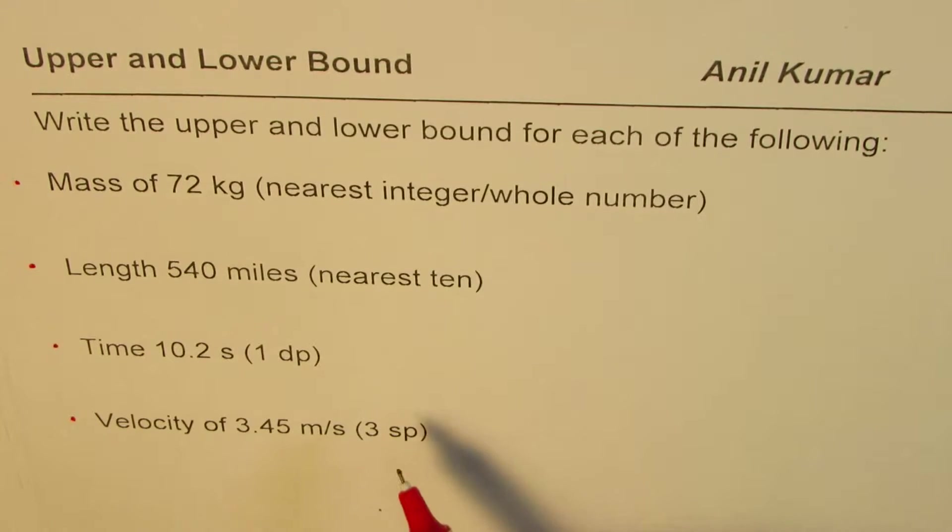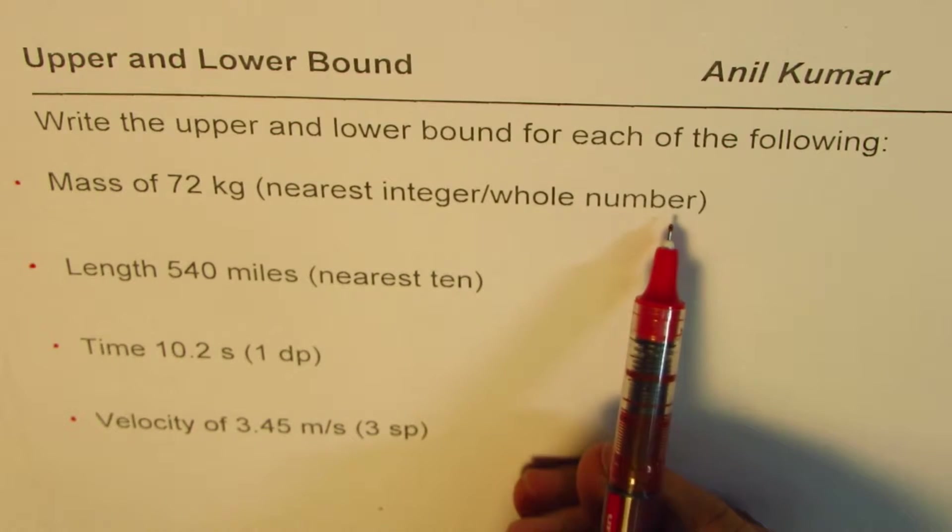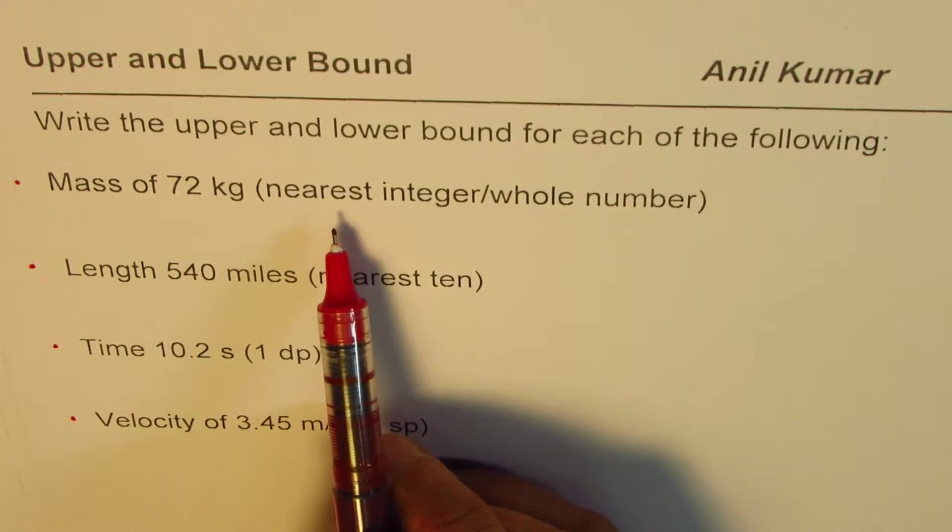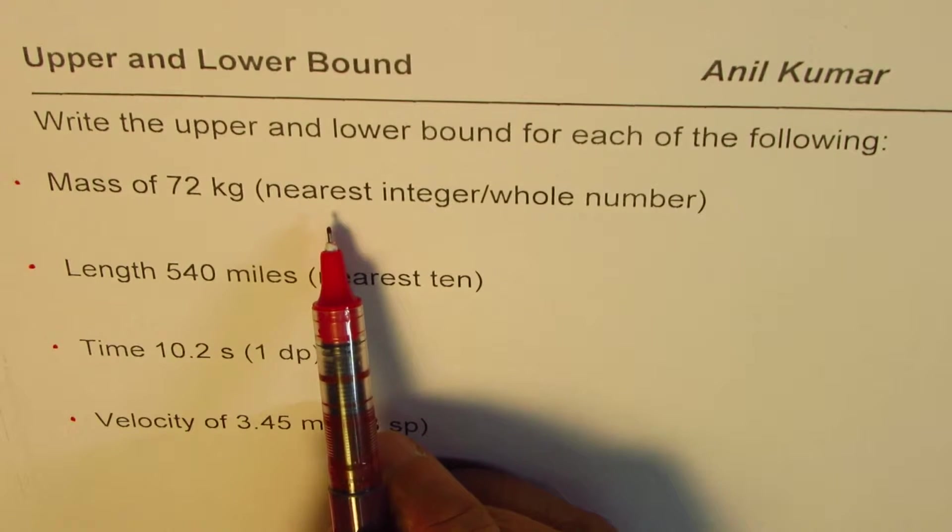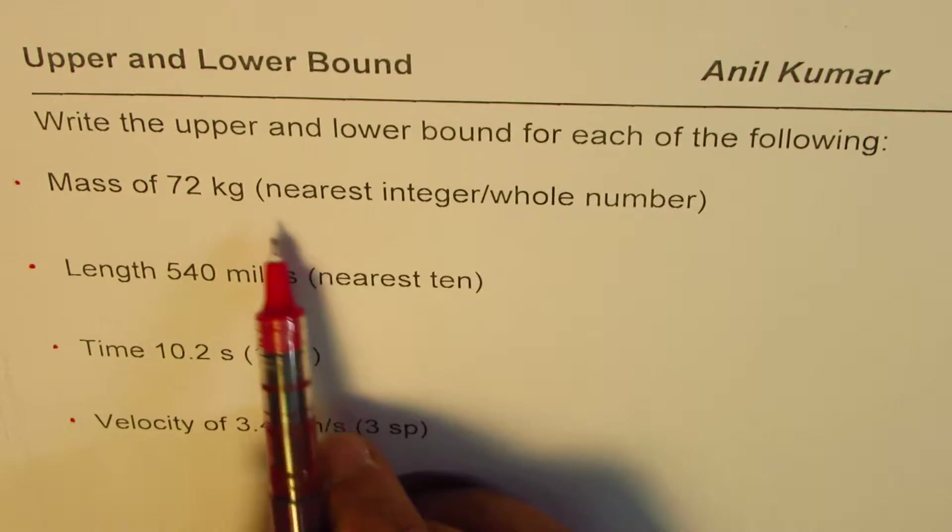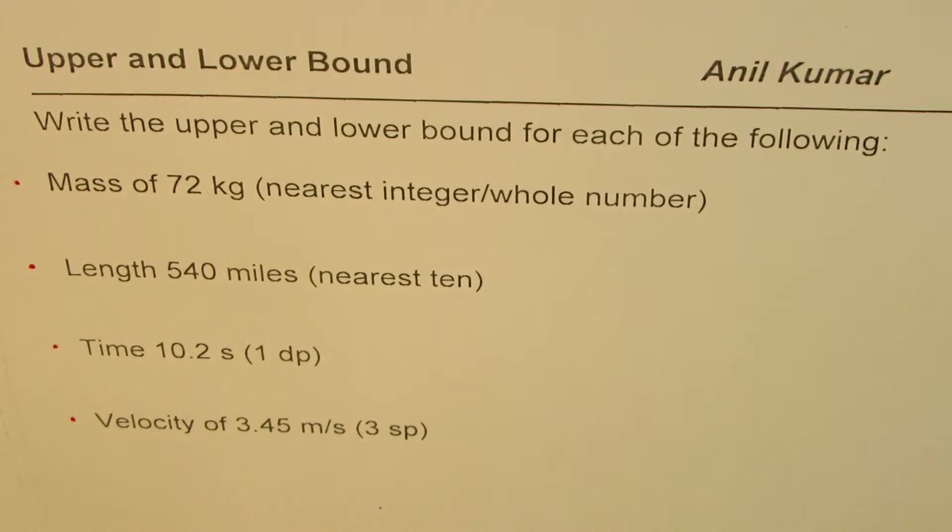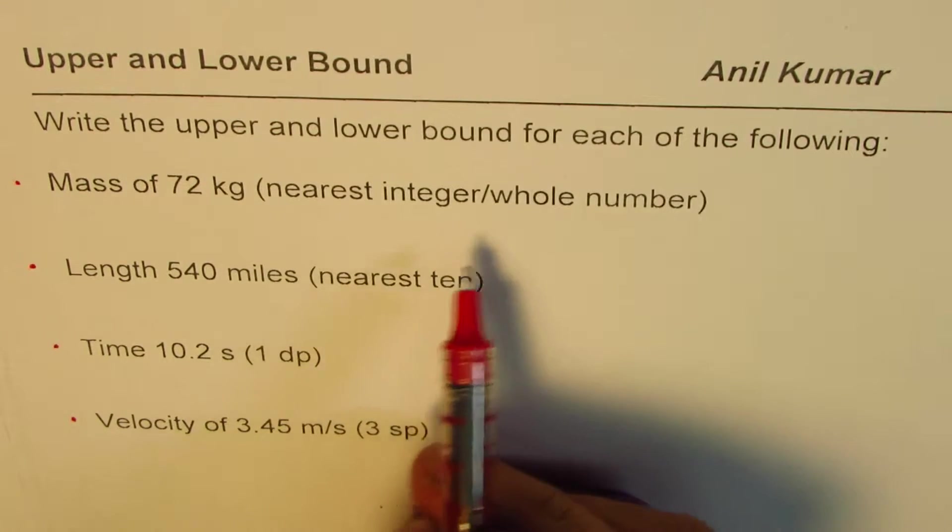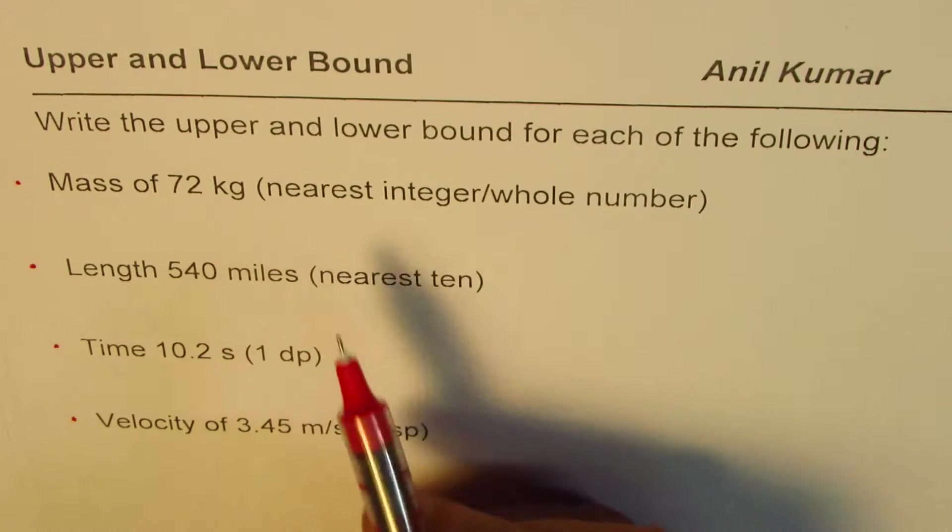In four examples we have also given something in brackets. Now whenever we are measuring physical quantities you can never find exact values. The measurement is limited by the instrument we use and by the skills which we have to measure. Our own skills play a big role in measurements.